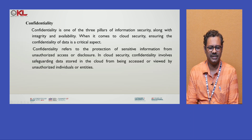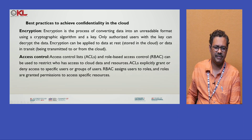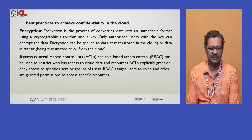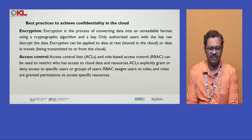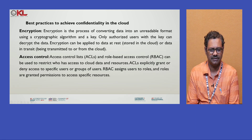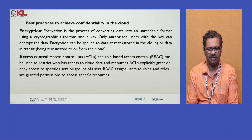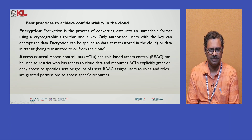Today we are discussing how we achieve confidentiality for data available in the cloud. These are the best practices to achieve confidentiality in the cloud. First one is encryption — this is the process of converting our data into unreadable format using a cryptographic algorithm and key. Only users with the key can decrypt the data. Encryption can be applied to data at rest, stored in the cloud, and data in transit — data being transmitted from one cloud to another or to outside.